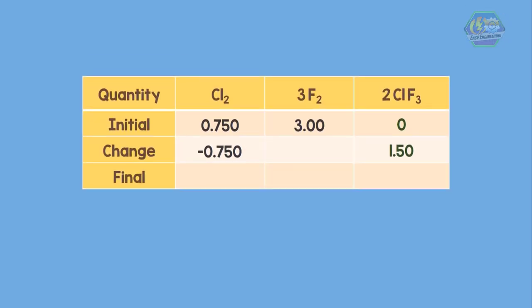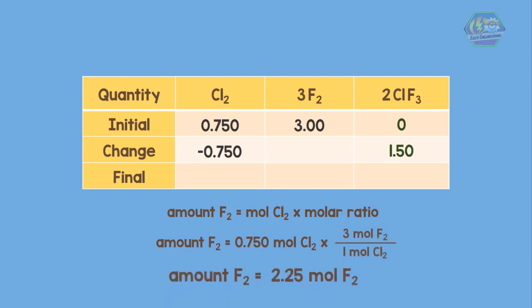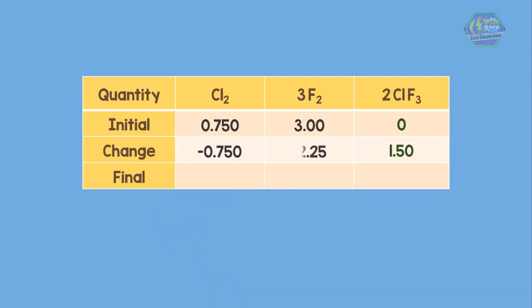Now writing the reaction table with chlorine as limiting reactant. For 0.750 mole of chlorine we need to find the mole of fluorine reacted. So to sum up, there is no chlorine left, there is only 0.75 mole of fluorine left, and there is 1.50 mole of chlorine trifluoride formed in the reaction.